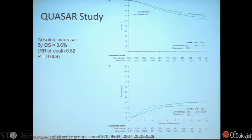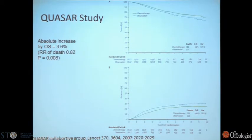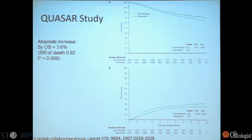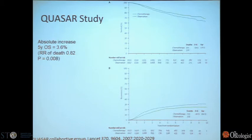The largest single trial looking at this question was the Quasar Study, a U.K. study where patients got post-operative 5-FU or observation. It showed a real but quite small five-year overall survival benefit of about 3.6%. Given that our colorectal cancer patients tend to be older, this causes a dilemma in the clinic. You have to treat a hundred patients to cure four, and many patients don't want six months of chemotherapy without a better sense of how much it will help them.